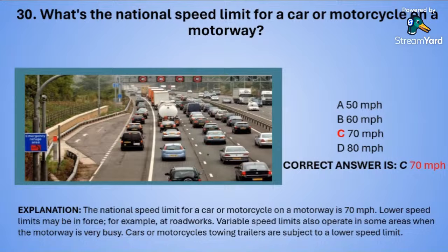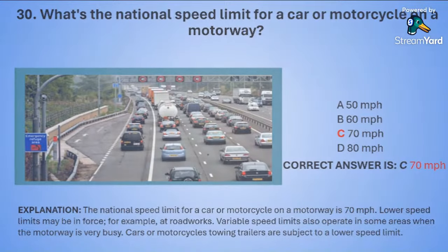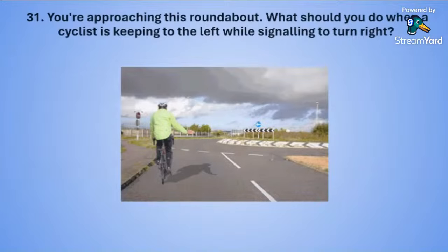The national speed limit for a car or motorbike on a motorway is 70 miles per hour. Lower speed limits may be in force, for example if there are roadworks. Variable speed limits also operate in some areas when the motorway is very busy. Cars or motorcycles towing trailers are subject to a lower speed limit.